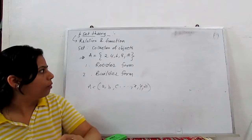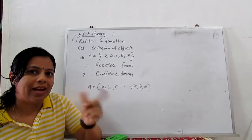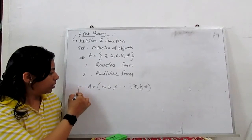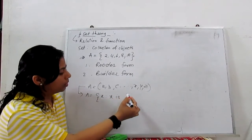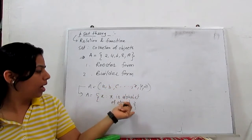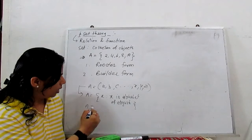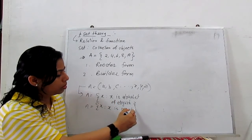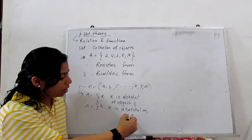Next I will describe the builder form. What is builder form? In builder form we describe a rule. From that rule, all the elements are related to each other. For example, {X | X is an alphabet of English} — so all alphabets from A to Z are contained in this set. For example, another set: A = {X | X is a natural number and X is greater than 3}.